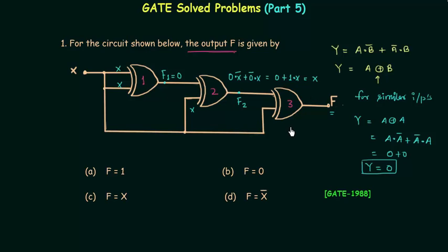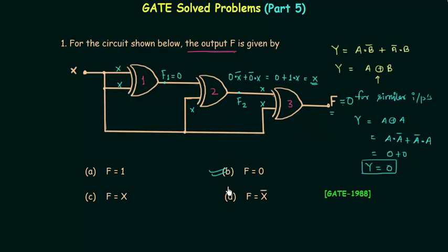Now we find the final output f. The first input to the third XOR gate is x, because the output of the second XOR gate feeds into it. The second input is also equal to x — you can see the connection. So we have two identical inputs to the last gate, and therefore the output is equal to zero. So zero is the answer. This is a simple problem based on the properties of the XOR gate, and option B is the correct option.